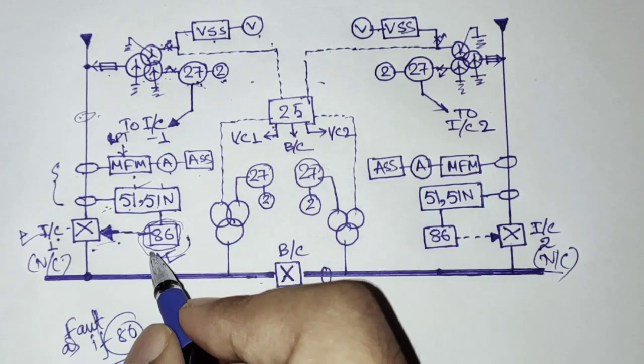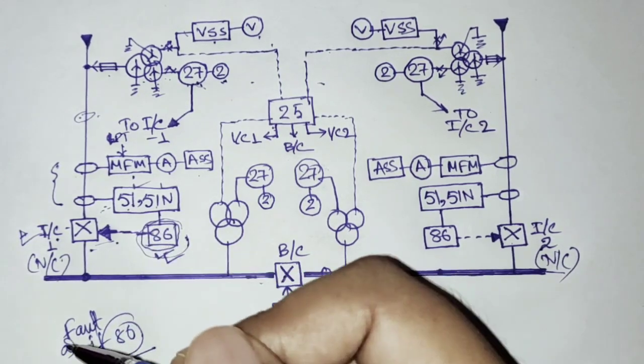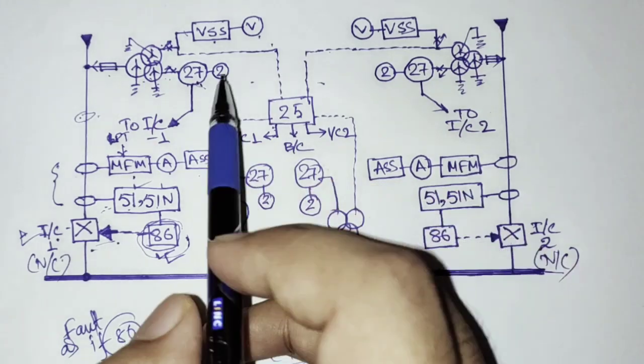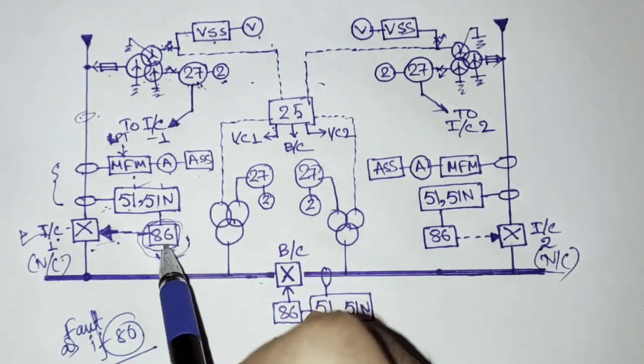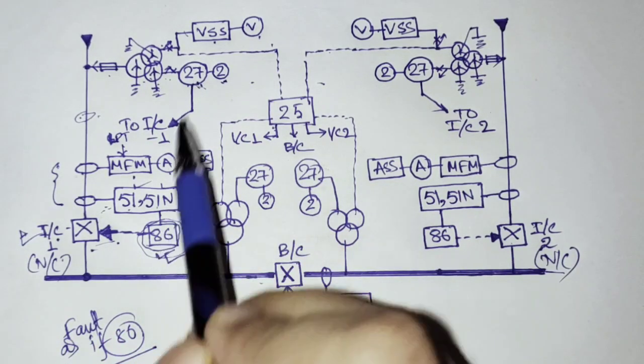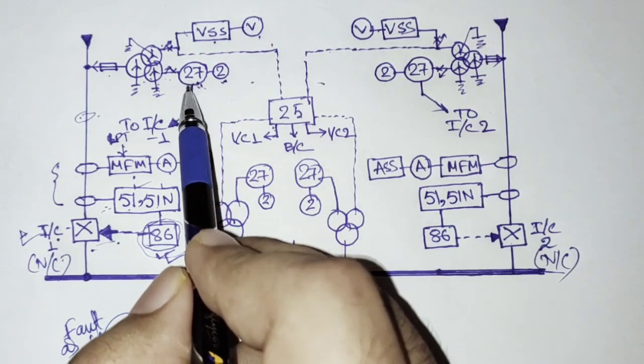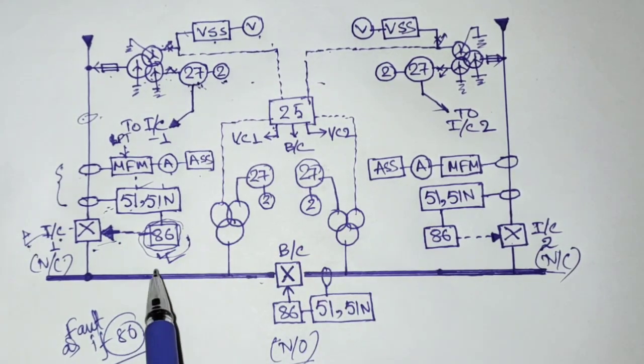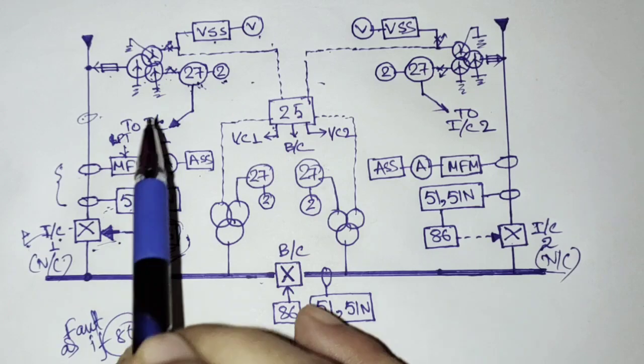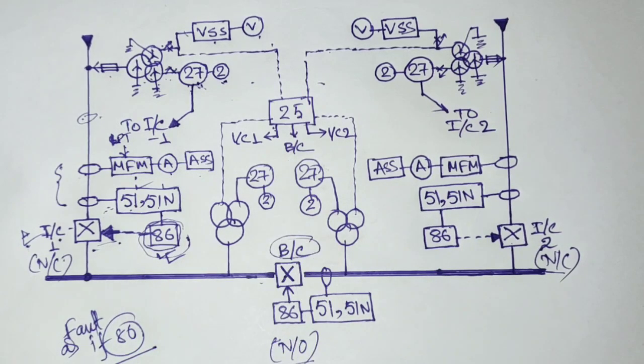If 86 hasn't operated that means there is no fault and if 86 has operated that means there is fault. So that is why the undervoltage relay isn't fed through the 86. So when undervoltage relay operates the incomer trips but the system understands that there is no fault.